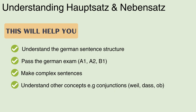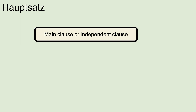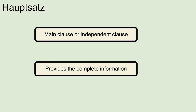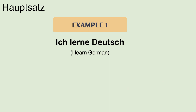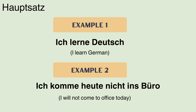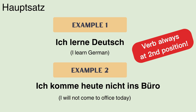A Hauptsatz is also called a main clause or independent clause in English. It is a sentence which can express a complete meaning without any additional information. For example, 'Ich lerne Deutsch' — 'I learn German.' These sentences convey a complete meaning and do not leave the reader with incomplete information. Another important characteristic of a Hauptsatz is that the verb always comes at the second position, as seen in the examples where the main verbs 'lerne' and 'komme' are both at the second position.